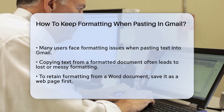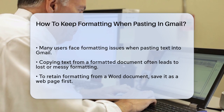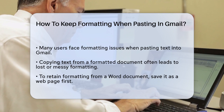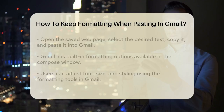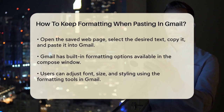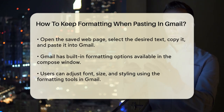First, if you're copying text from a Word document, you can save the document as a web page. Once saved, open the web page, select the text you want, copy it, and then paste it into Gmail. This method will help retain most of the original formatting.